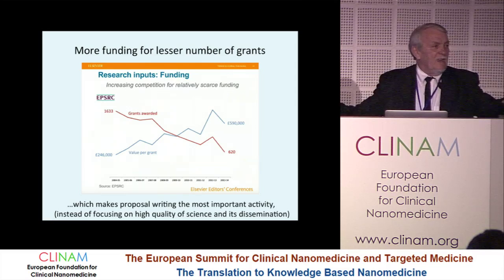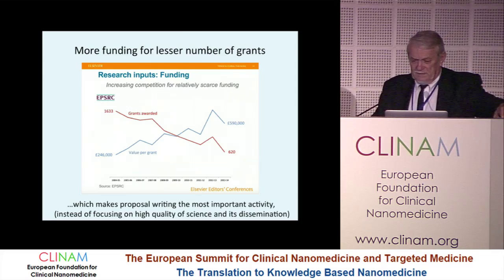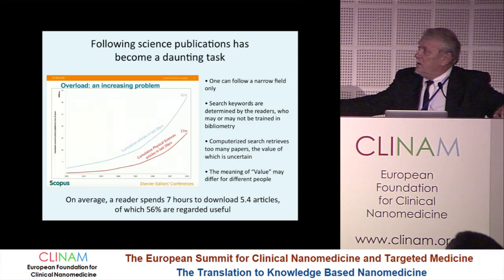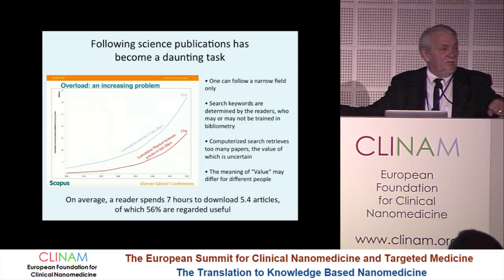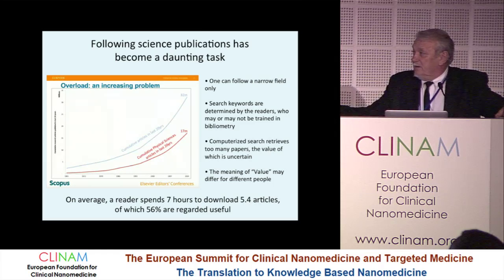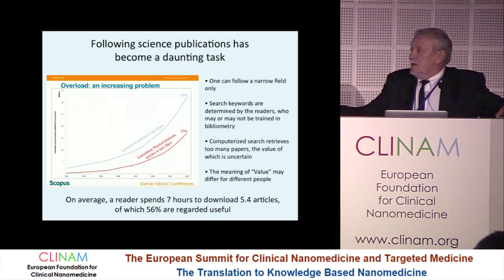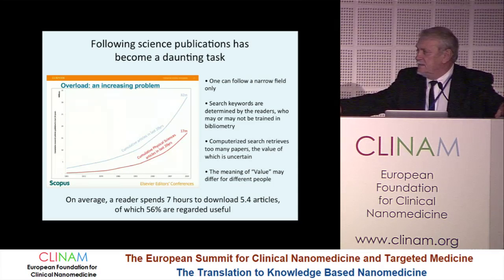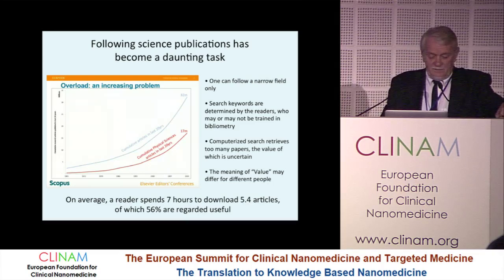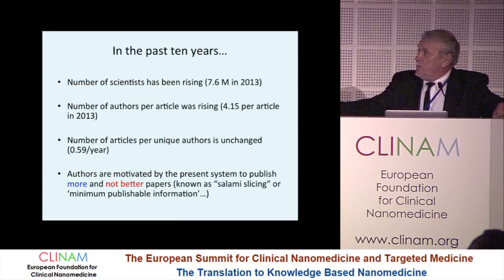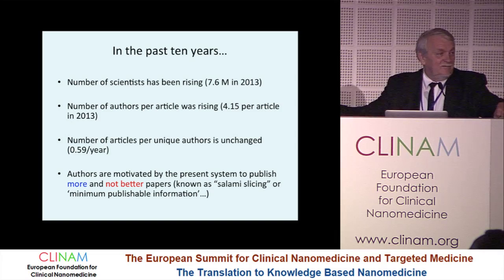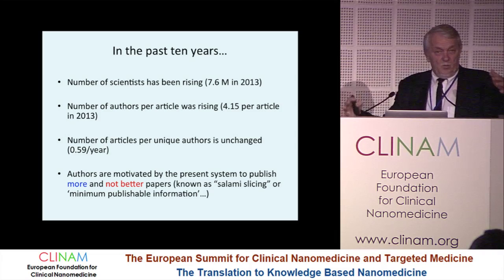Instead of focusing on high quality of science, following scientific publications has become a daunting task because one can follow only a narrow field. You search by keywords, but keywords give you exactly what you are looking for — you don't get the context. On average in 2013, a reader spent seven hours to download about five to six articles, half of which were regarded as really useful. In the past ten years, there are now approximately 7.6 million scientists. The number of authors per article is rising — it's 4.1 — but the number of articles by unique authors has been unchanged. Authors are motivated to write more papers, not better papers.